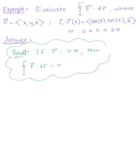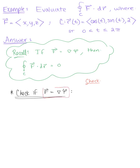So before we get started on any extra work, let's double check to make sure that this vector field is or is not conservative. We want to check if the given vector field F is equal to the gradient of a potential function. We need to make sure that the partial derivative of F with respect to Y is equal to the partial derivative of G with respect to X.